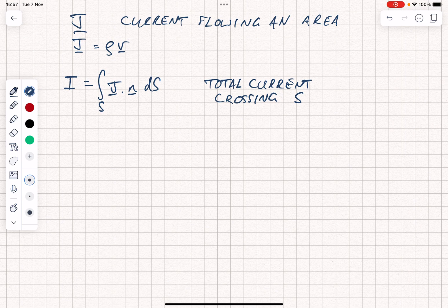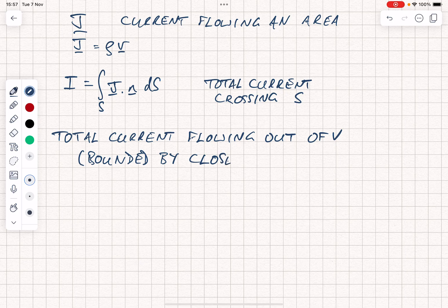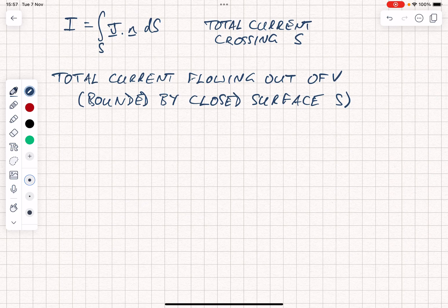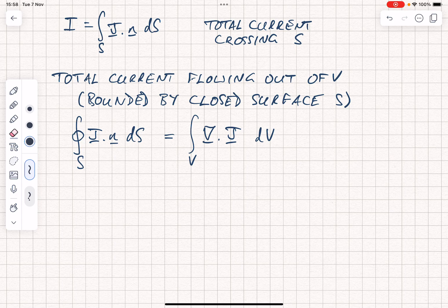Now using that, we can think about the total current flowing out of a volume v, which will be bounded by a closed surface. Notice this time we do have a closed surface because it's bounding a volume. It's given by the closed surface integral of j dot n ds. Using the divergence theorem, we can rewrite this closed surface integral as a volume integral of div j dv. So that's the current flowing out of a volume.